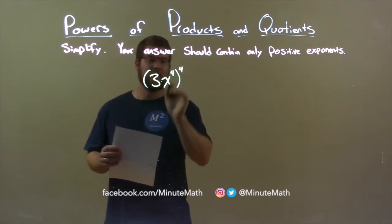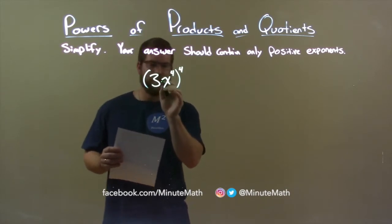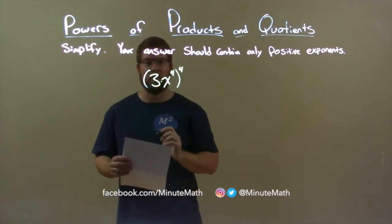Now, our two terms, 3 and x to the 4th power, they're separated. Well, not really two terms, but they're separated by multiplication.